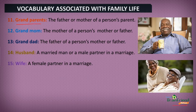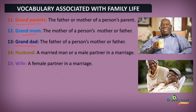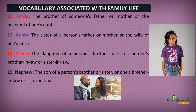Next, we have Grandparents — the father or mother of a person's parents. Next, we have Grandmom — the mother of a person's mother or father. Also, we have Granddad — the father of a person's mother or father. Next, we have Husband — a married man or a male partner in a marriage, while the Wife is a female partner in a marriage. Next, we have Uncle — a brother of someone's father or mother or the husband of one's aunt. Next, we have Auntie — the sister of a person's father or mother or the wife of one's uncle.